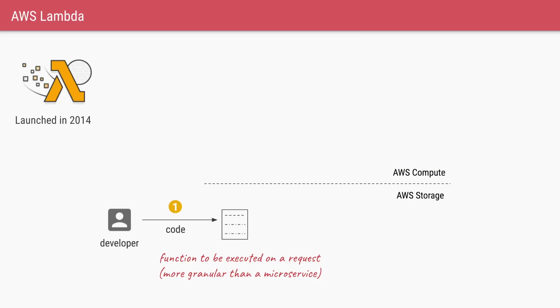AWS Lambda, launched by Amazon in 2014, was one of the first function-as-a-service offerings in the cloud. Before we try to understand when to use it, let's see how it works internally.